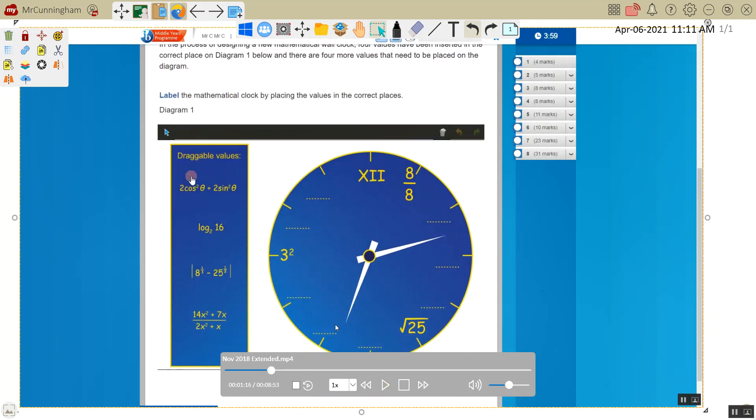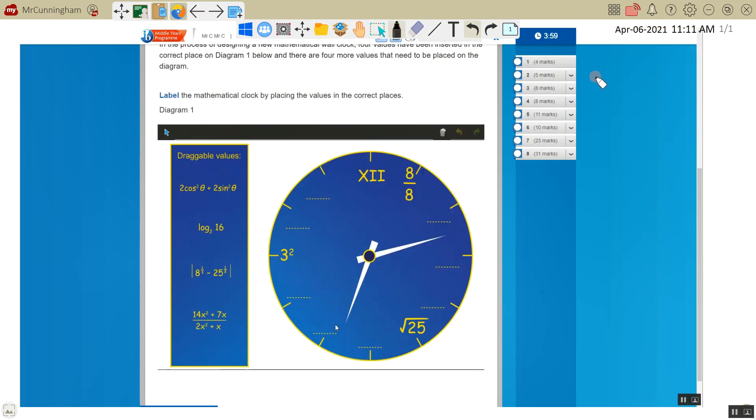Okay, so I've got my draggable values. So on your assessment you would drag these across into the correct places. And so we've got already a few in place and so we need to pick some of these. You'll have a piece of paper that you can write stuff down. I'm going to start off with this one: log 16 to the base 2.